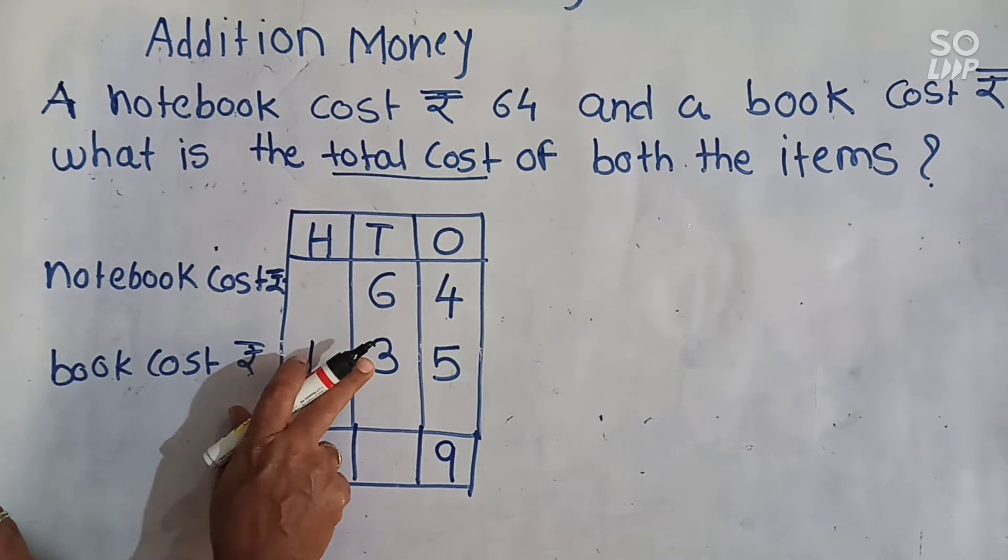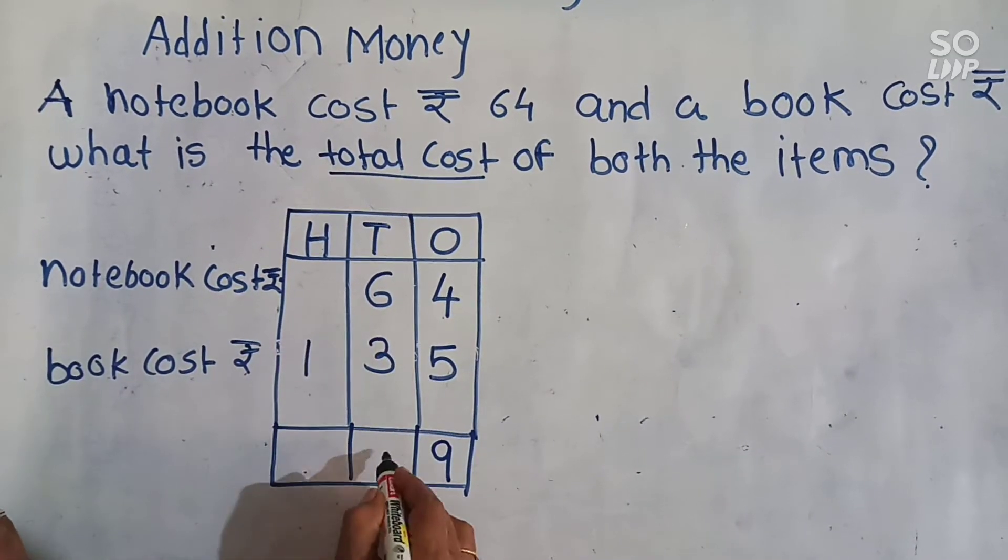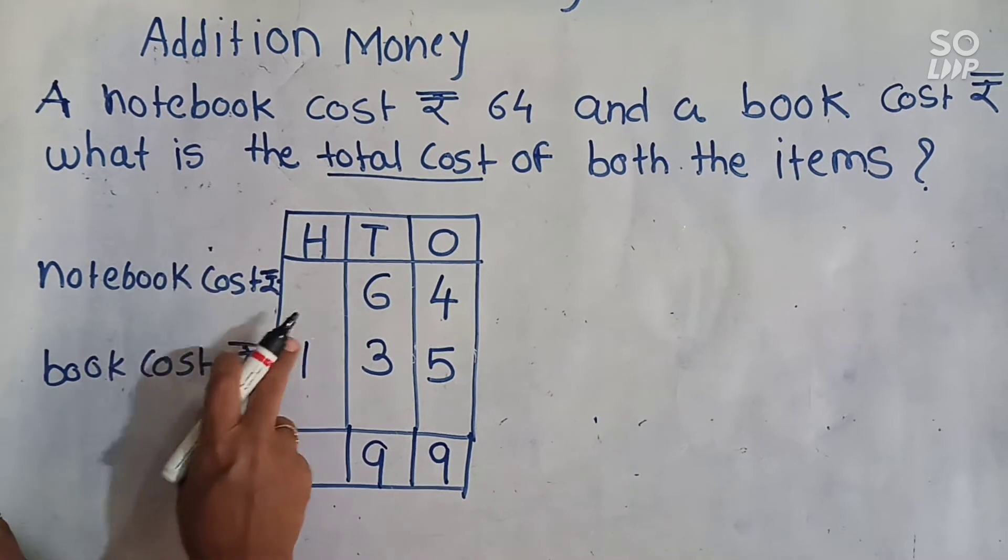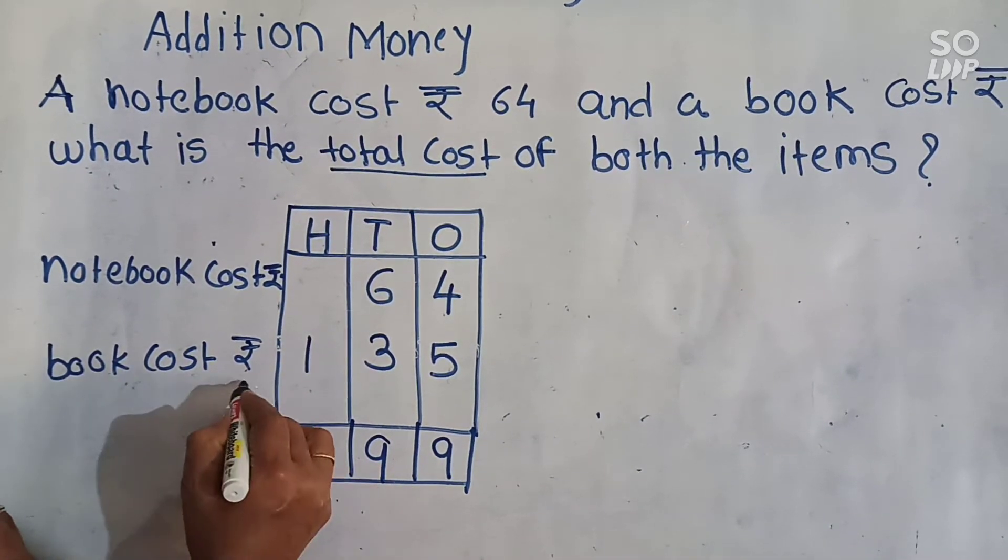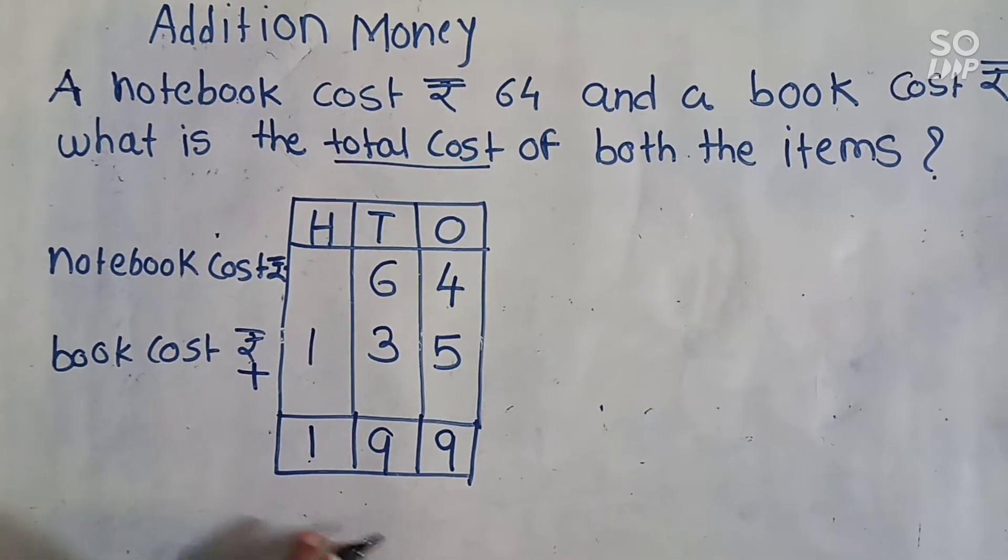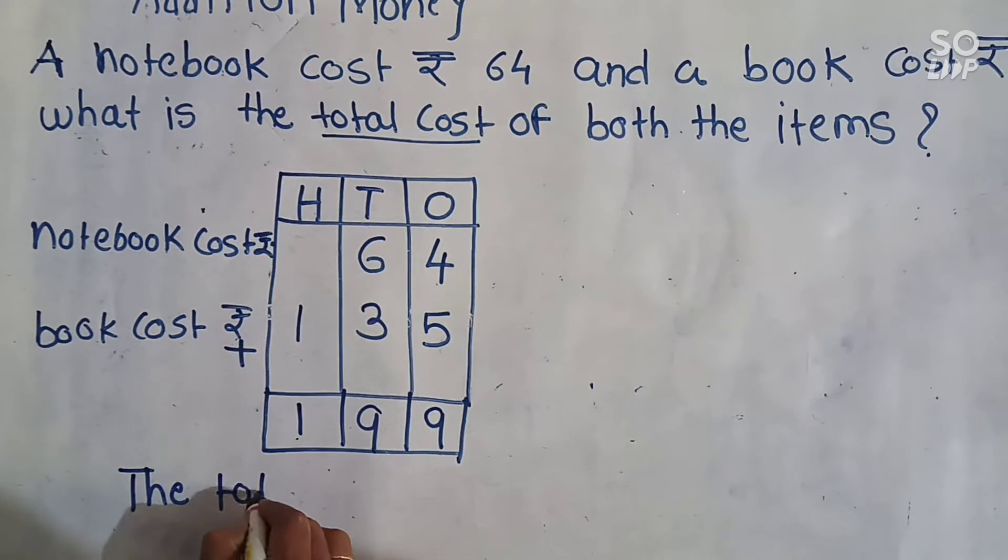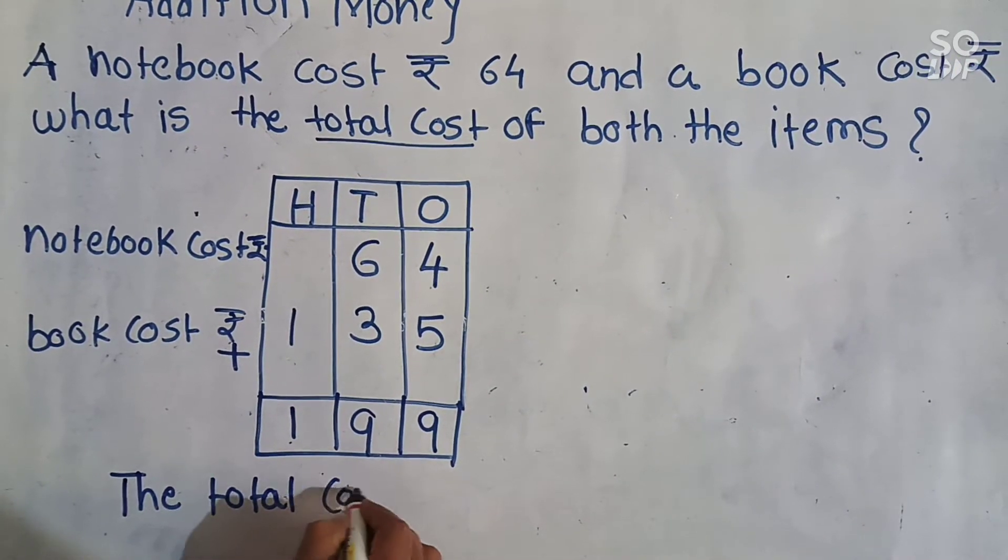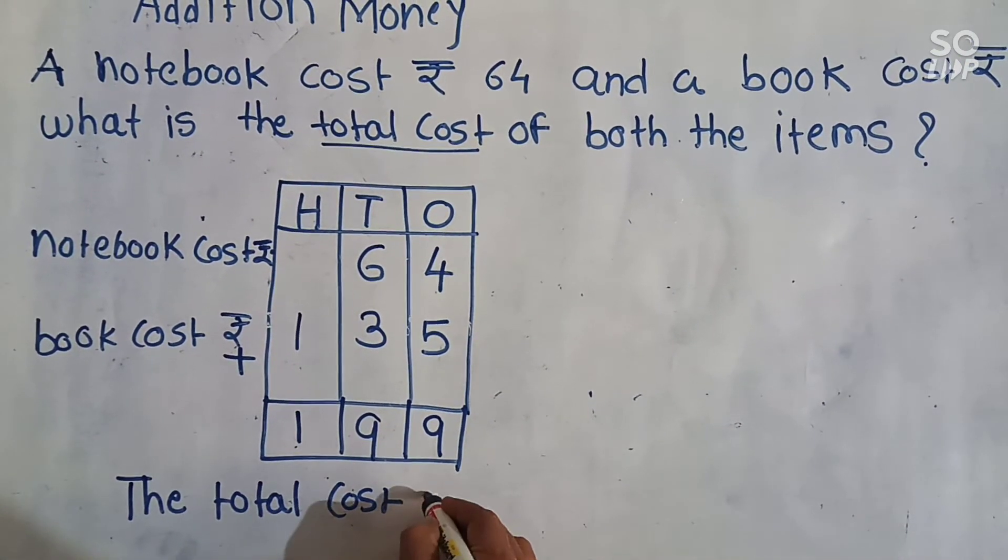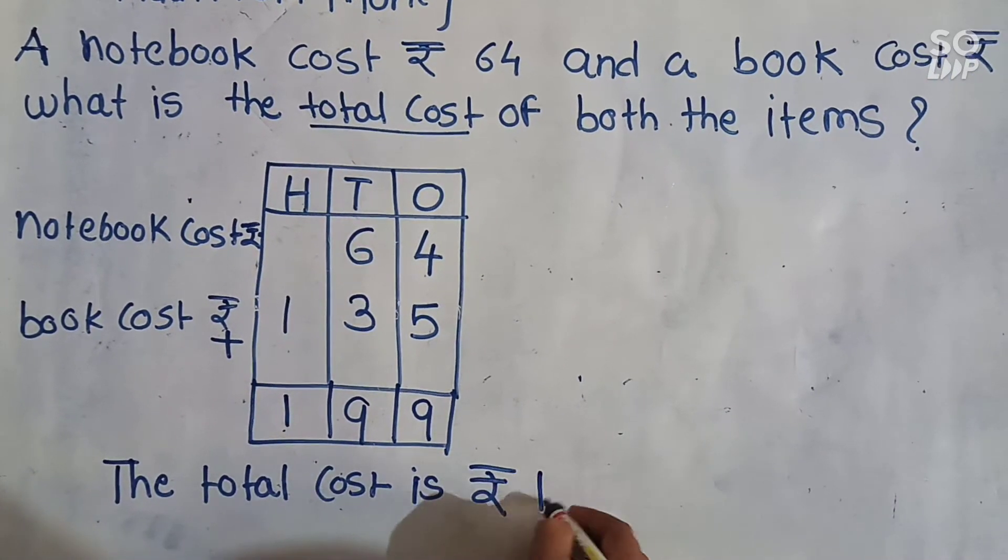Six plus three in tens place. Six plus three. Seven, eight, nine. And hundred plus one. We have to do the sign of addition. So the total cost, the total cost is rupees 199.